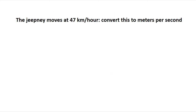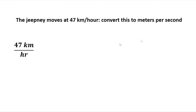Let's have another example. A jeepney moves at 47 kilometers per hour. Convert this to meters per second. The given is 47 kilometers per hour. For kilometers to meters, one kilometer equals 1,000 meters. Since kilometers is in the numerator, during conversion it should be at the denominator.